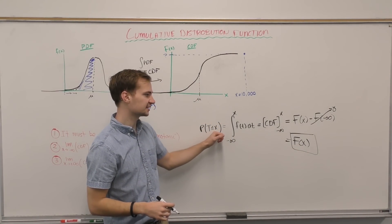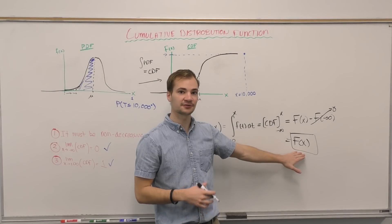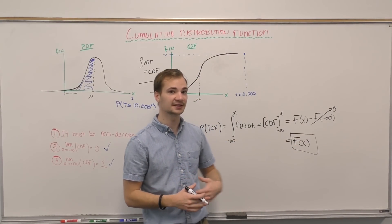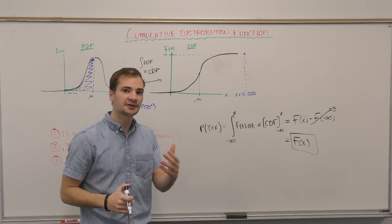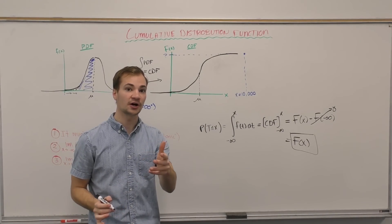And so all we're left with is the CDF where we plugged in the x that we cared about. So the probability of the temperature being less than a certain x is whatever that x-value is in our CDF, and we can plug that in mathematically. And of course, this gives way to the following theorem.